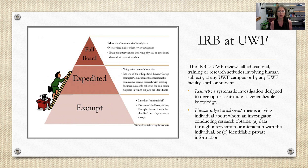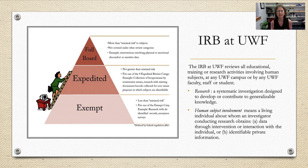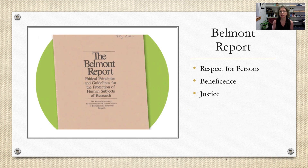Not greater than minimal risk falls under the expedited level, with different qualifiers for what fits within that expedited or fast-track approval method. I've left you more resources in the Canvas shell to look at the UWF IRB manual and the categories that fit the expedited level. Proposals that are more than minimal risk have to go to the full board, so everyone on the committee has to review research proposals that involve more than minimal risk.